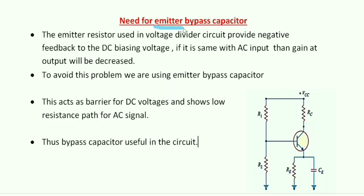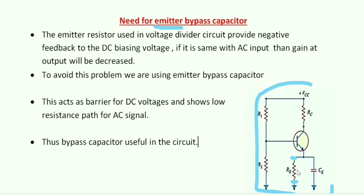We will discuss the need for an emitter bypass capacitor. This is a self-biasing circuit, and in this circuit we have seen a different element — the emitter resistor RE — which we hadn't seen in the collector-to-base biasing circuit or in the fixed biasing circuit. We have seen this RE in the self-biasing or voltage divider biasing circuit.